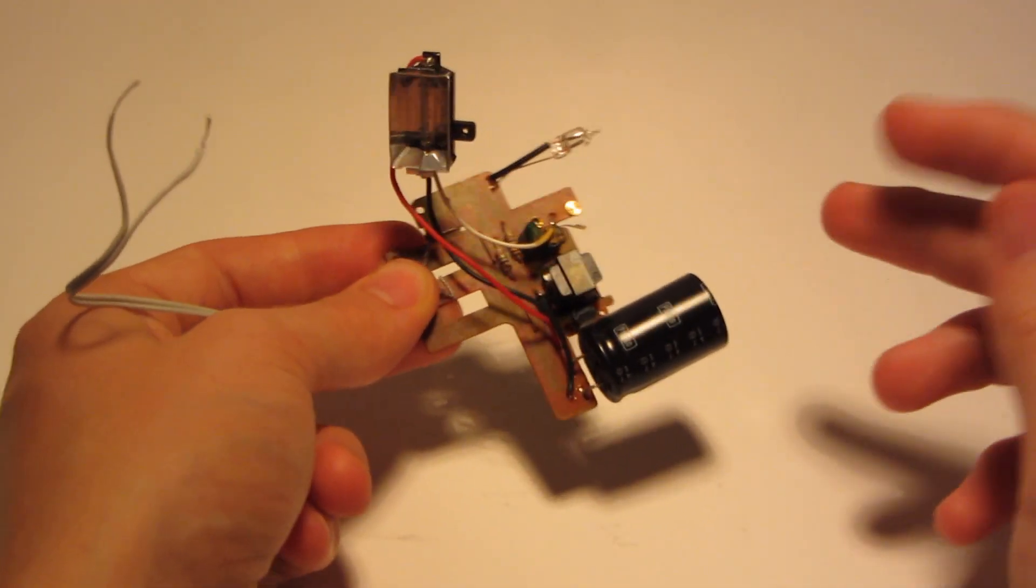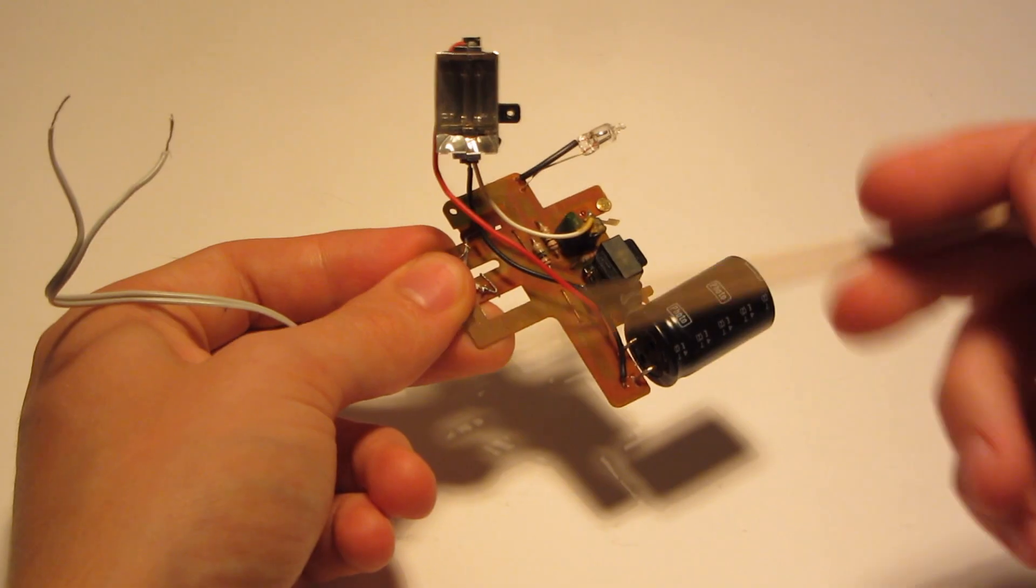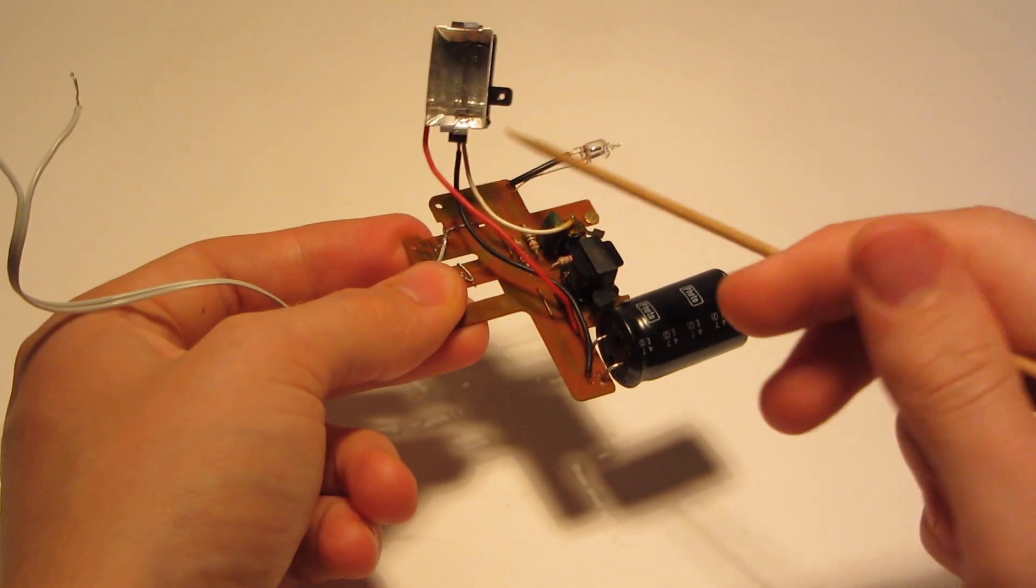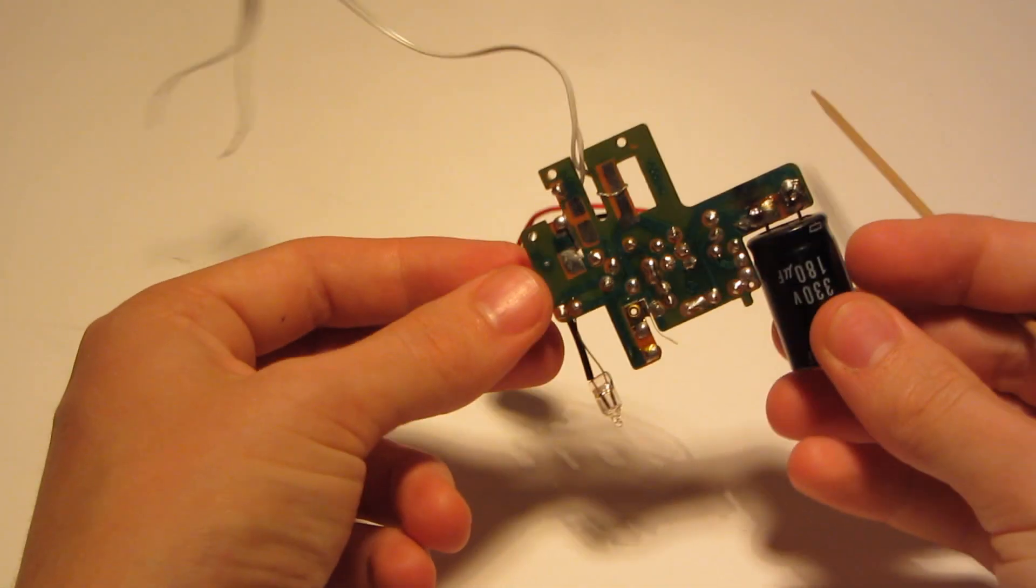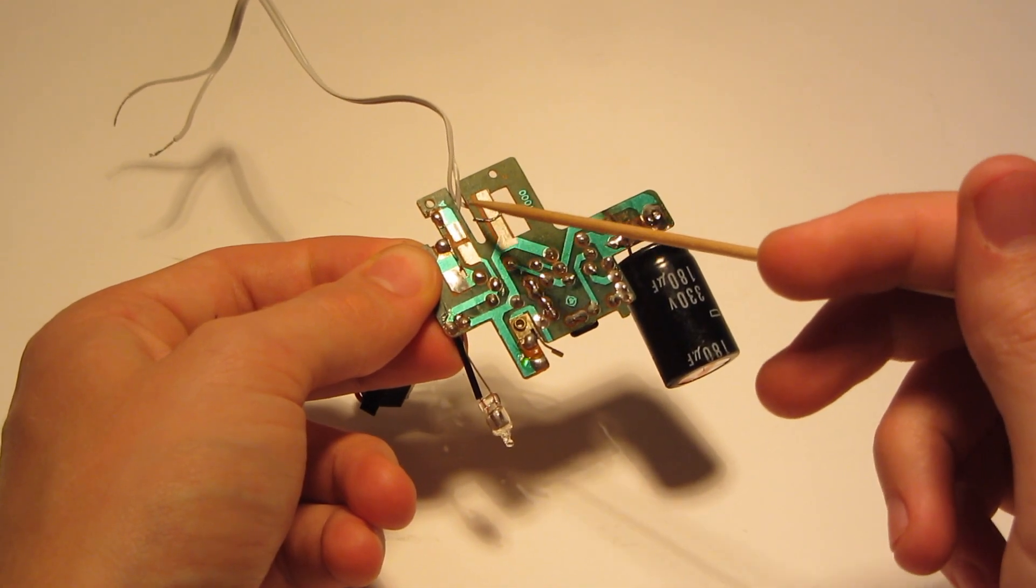For your own coil gun you might want to use the circuit board from an old disposable camera because everything you need is already on the board. All you have to do is cut away the parts you don't need, like the flash bulb here, it's only in the way, and identify the two contacts which the battery normally contacts to, like plus and minus.